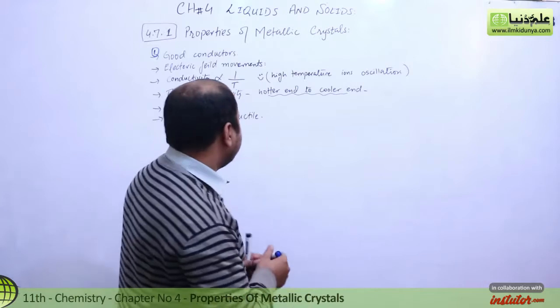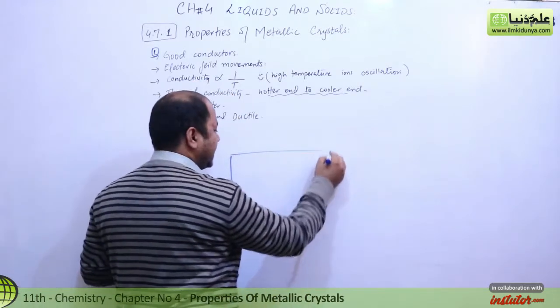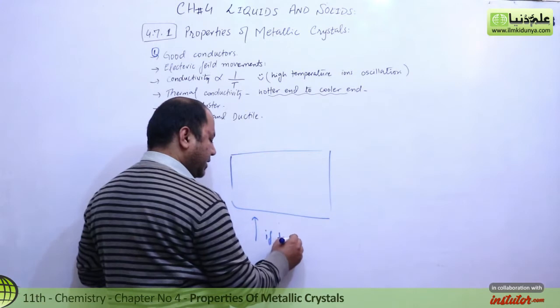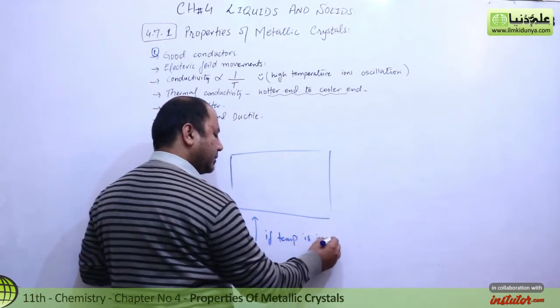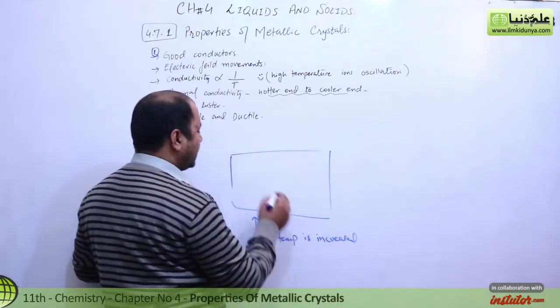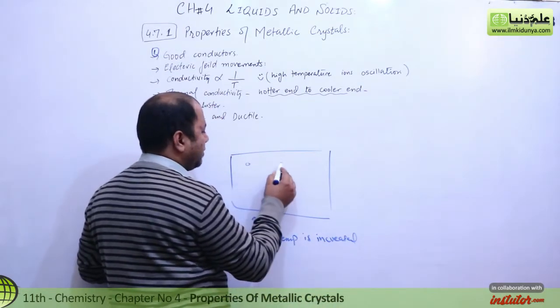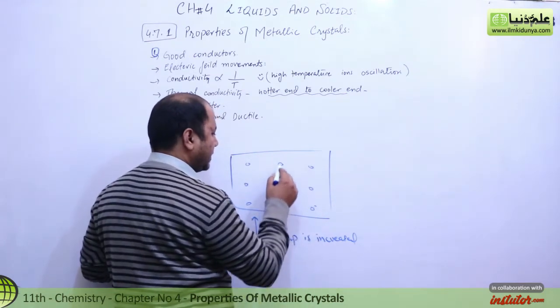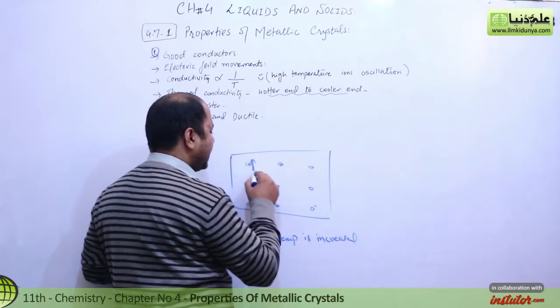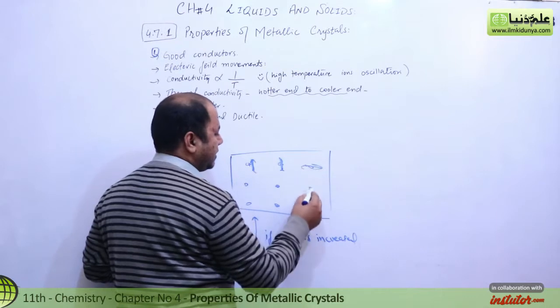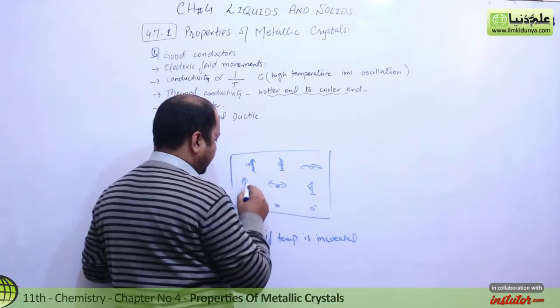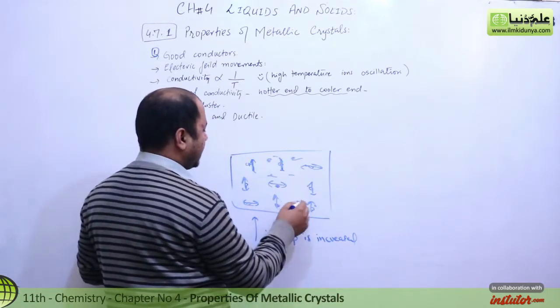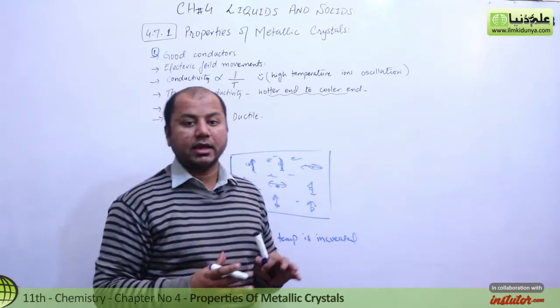This means that if we have a metallic sheet and we increase its temperature, the electrons will be in motion, but along with that, the ions will also start to oscillate. The direction of oscillation depends on different theories, but there's no doubt that electrons are in motion.